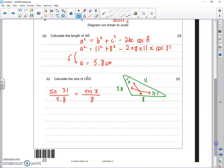So we need to bring the 8 over. So now we've got that 8 times sine 31 over 5.8 equals sine X.